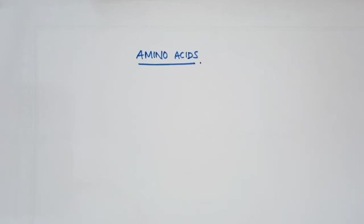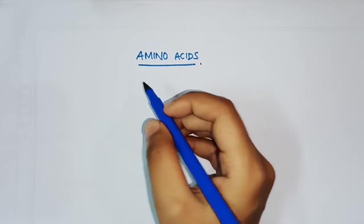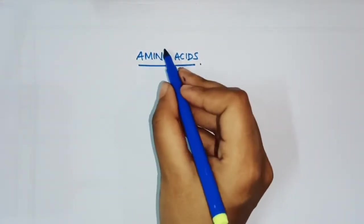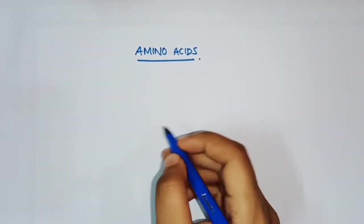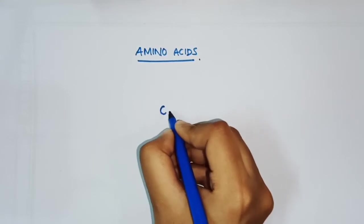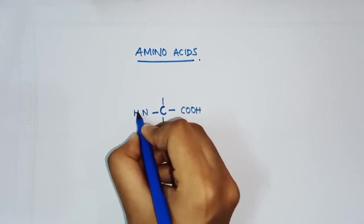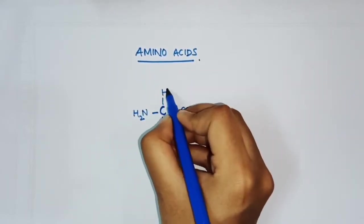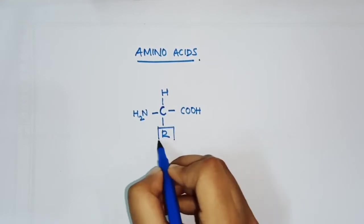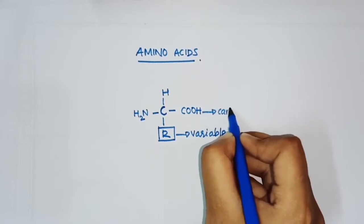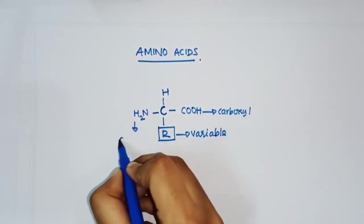Hello everyone, welcome to Biochemistry Tutor. In this video we will study how to draw the structures of the 20 standard amino acids. Amino acids are organic compounds which contain an amino group and an acid group. To draw the structure of an amino acid, we start with the alpha carbon, which has four valencies: a carboxyl group, an amino group, a hydrogen, and the R group, which is the variable side chain.